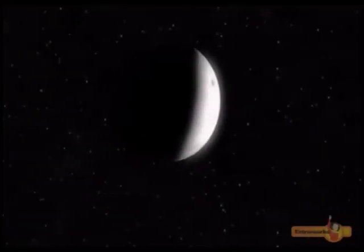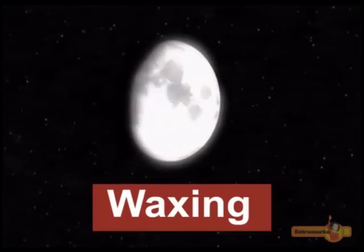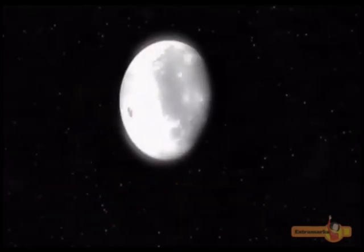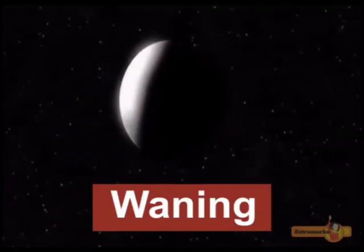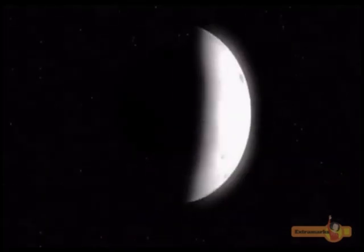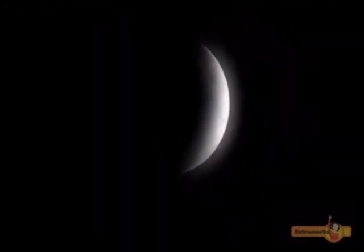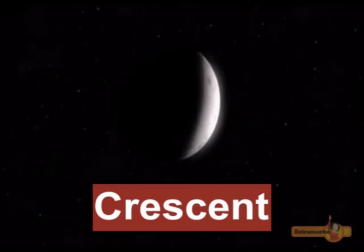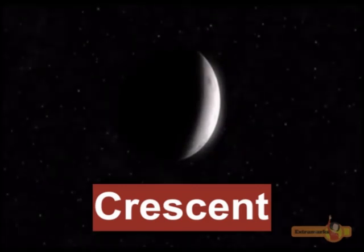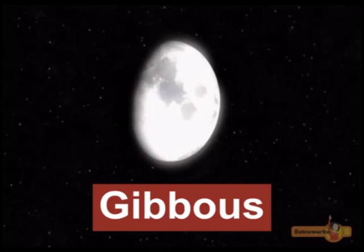When the moon appears to be growing, it is said to be waxing, and if it appears to be getting smaller, it is waning. A crescent-shaped moon means it is less than half illuminated, and gibbous means it is more than half illuminated.